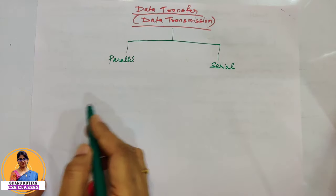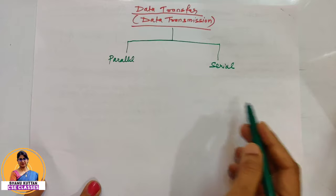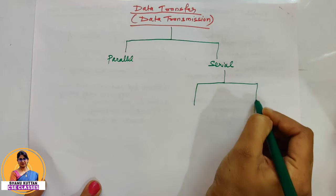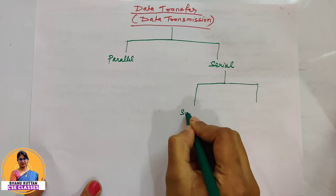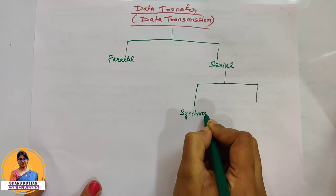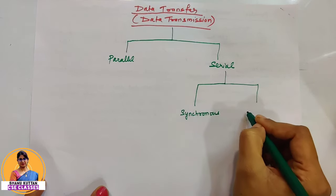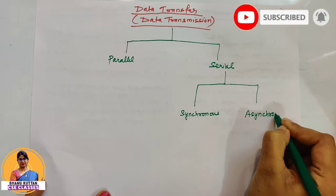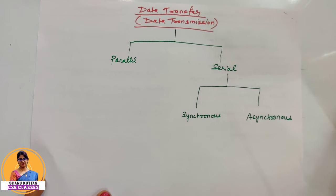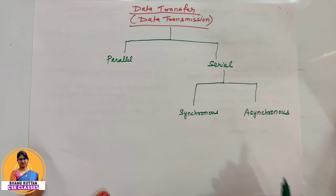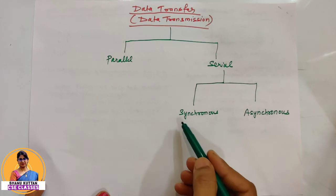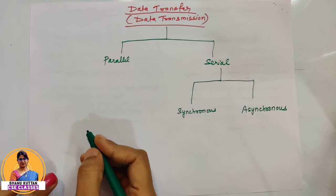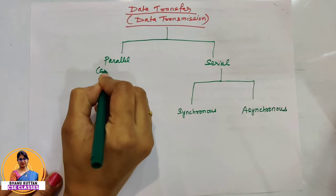Parallel means parallel data bits and serial means serial data bits. We will divide serial again into two parts: one is synchronous data transfer and another is asynchronous data transfer. We will see these one by one. Parallel transmission is considered synchronous data transfer.